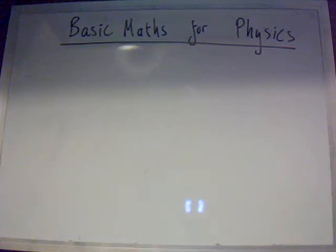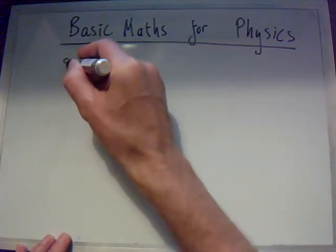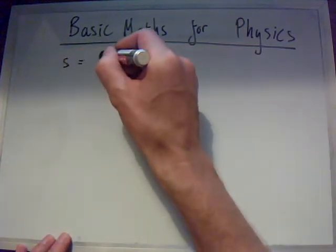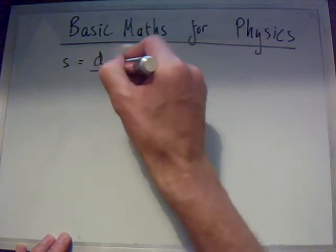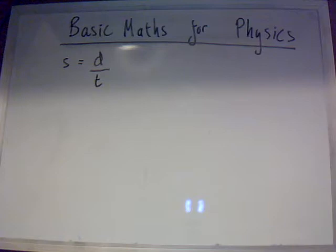Hello, in this video we'll be looking at some basic maths for physics. Let's have a look at the very useful equation: speed equals distance divided by time. Now that is an equation that you will have come across in other courses, previous to the A level or the IB.